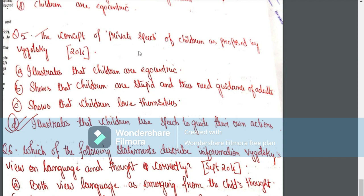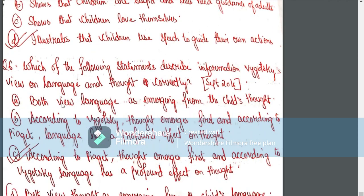The concept of private speech of children as proposed by Vygotsky illustrates that children use speech to guide their own actions. That is option D — it illustrates that children use speech to guide their own actions.